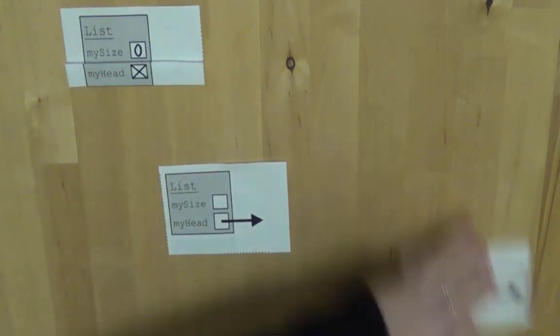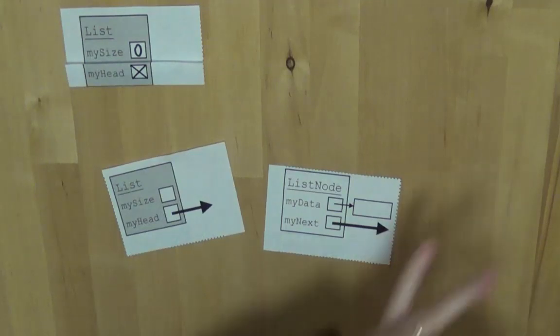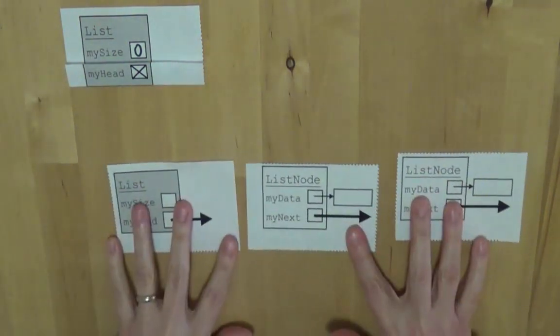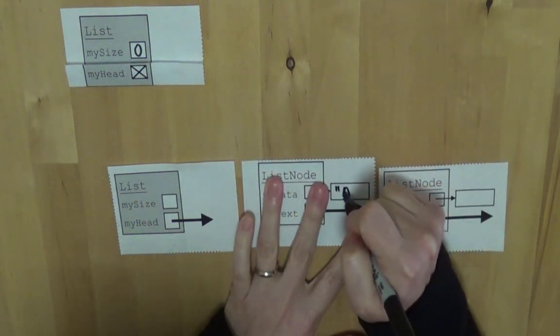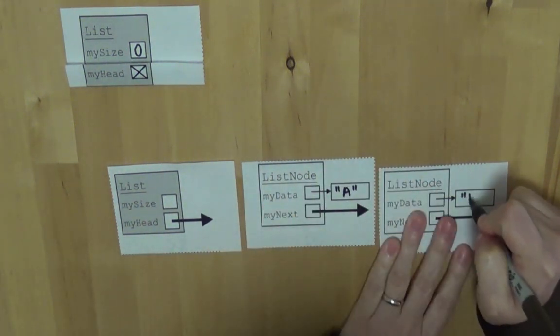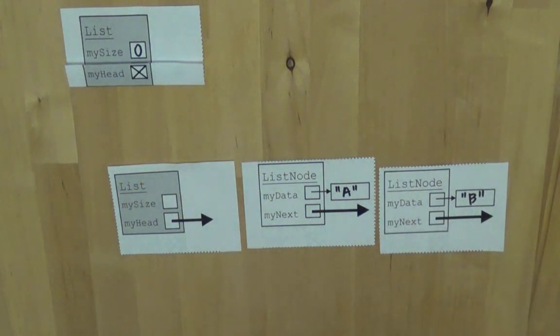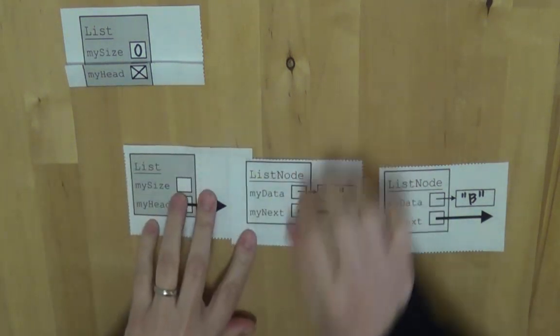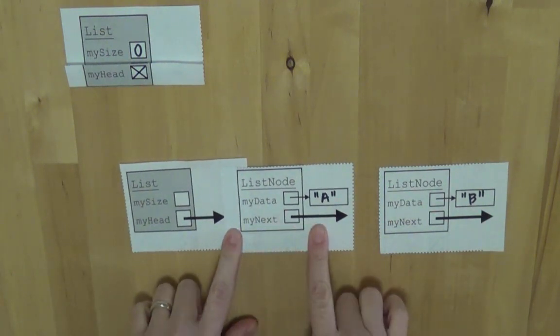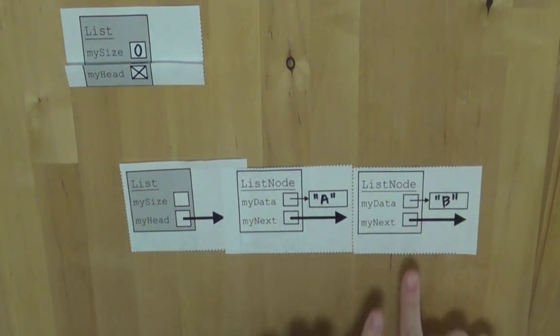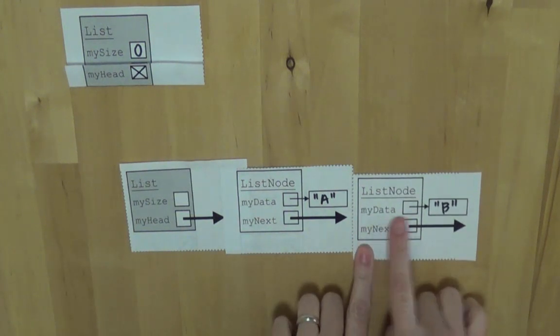What about a scenario where we have two list nodes? So we're trying to represent a list in Java, and maybe I have the data A and B. You might write in there just with a pencil so you can erase it, but I wanted you to be able to see it. So my head could point to my first list node that has the data A, and my next could point to my second list node, which has the data B.